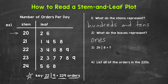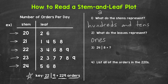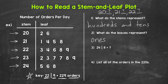For the stems, we have 20, 21, 22, 23, and 24. So we have the two hundreds, the two-tens, the two-twenties, the two-thirties, and the two-forties. Think of the stems like this: stem of 20 covers the hundreds and tens place, and then the leaves go in the ones place. Then the stem of 21, leaves in the ones place. Stem of 22, leaves in the ones place. Stem of 23, leaves in the ones place. And then the stem of 24, leaves in the ones place.